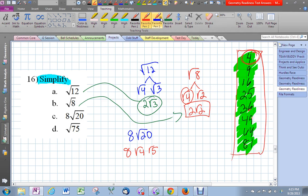So how do we simplify that? That's going to be 8 times 2 times radical 5, and we have to clean that up. That is 16 radical 5. So that's the answer to 8 radical 20.